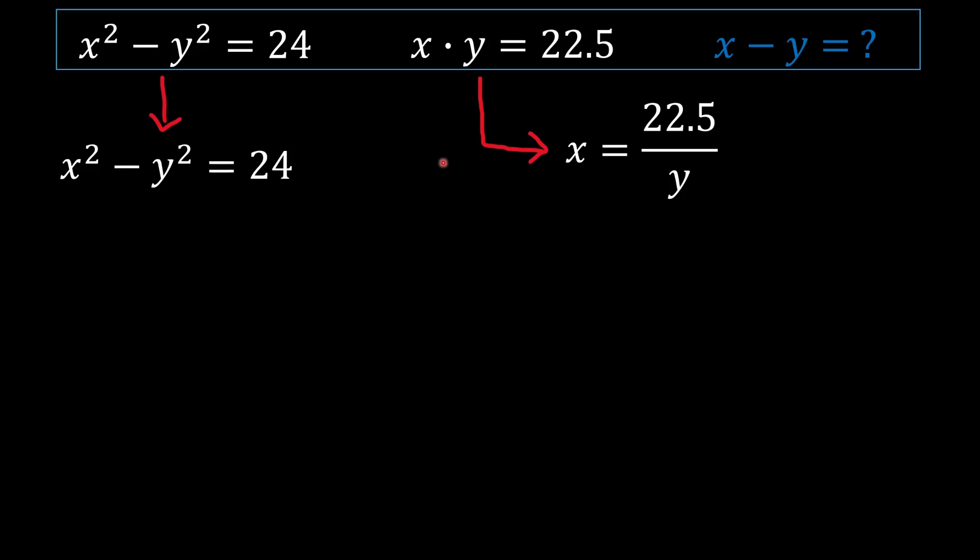What I'm going to do afterwards is I'm going to move this x term into this equation, into the first equation which is located on your screen over here. Once we proceed and we do the necessary substitution, as you can see with the arrow, we will obtain 22.5 divided by y. And that's basically open and close brackets squared minus y squared is equal to 24.